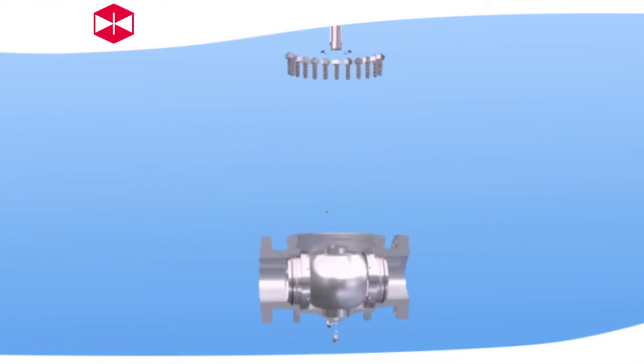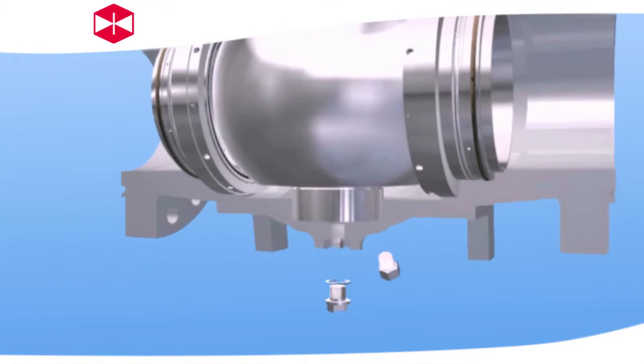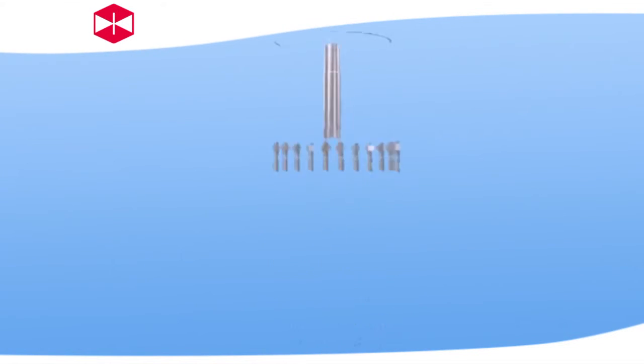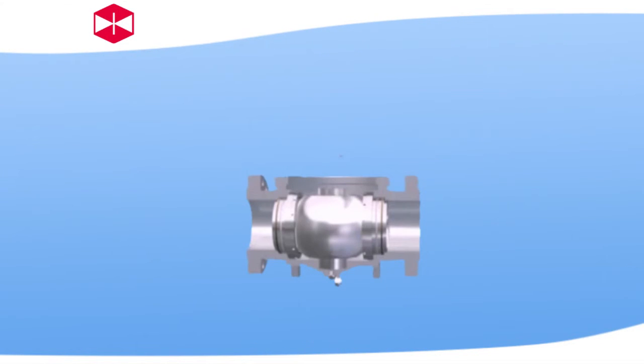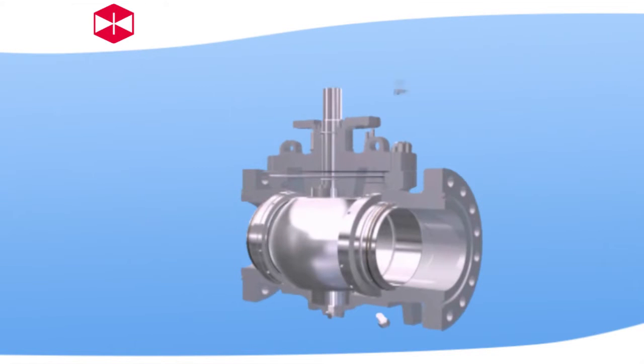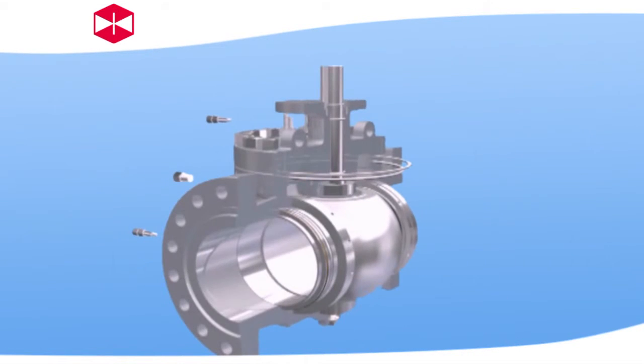Top entry ball valve adopts fixed ball structure. All the force generated by the pressure acting on the ball is absorbed by the upper and lower bearing. To avoid damage of the seat due to excessive pressure, the spring-loaded sealing structure design of the seat is used, with double sealing function of inlet and outlet and its operating platform.